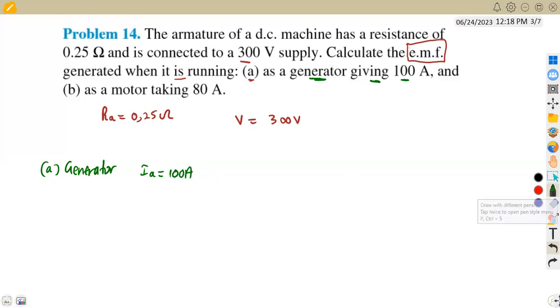The same thing we have operating now as a motor, the B part, operating as a motor but now taking 80 amps, which is our armature current as 80 amps.